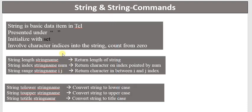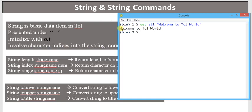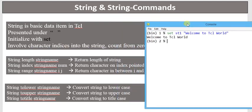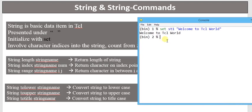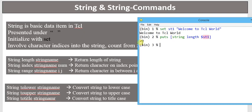Characters in a string are always indexed starting from zero to the end. There are certain commands involved with strings. `string length` is a particular command which returns the length of a string. Suppose I want to know the length: I use `puts [string length st1]`. All string-based commands start with the keyword `string`. If I press enter, it provides the count — there are 20 characters, and spaces are also counted as characters.